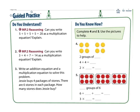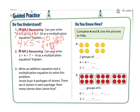Can you write a multiplication equation for this addition problem right here? How many times do we have 5 here? We have it 4 times. So 4 times 5 equals 20. So yes, we can, because we have 4 equal groups of 5. Can you write 3 plus 4 plus 7 as a multiplication equation? No, we cannot — because the groups are not equal.